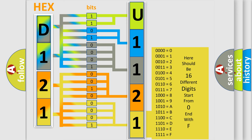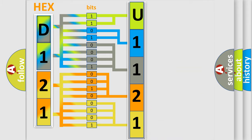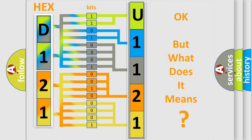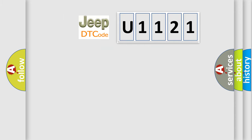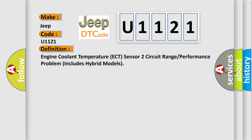We now know in what way the diagnostic tool translates the received information into a more comprehensible format. The number itself does not make sense if we cannot assign information about what it actually expresses. So, what does the diagnostic trouble code U1121 interpret specifically for Jeep vehicles? The basic definition is: engine coolant temperature ECT sensor 2 circuit range or performance problem — includes hybrid models.